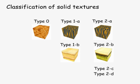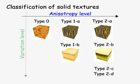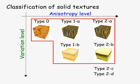We classify solid texture into seven types based on two aspects: an isotropic level and a vibration level. Please refer to the paper for the detail of this classification. Our system supports five types and provides a different user interface for each.